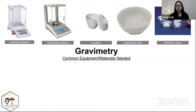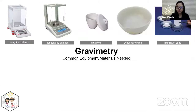You also have sample holders: crucibles, evaporating dishes, and aluminum pans to hold your filter. Crucibles are normally used when you need to heat your sample at very high temperatures.